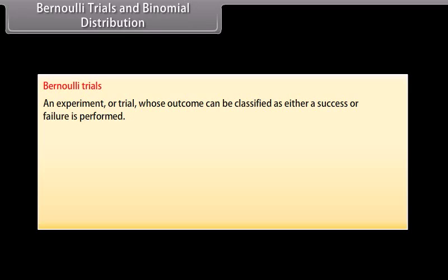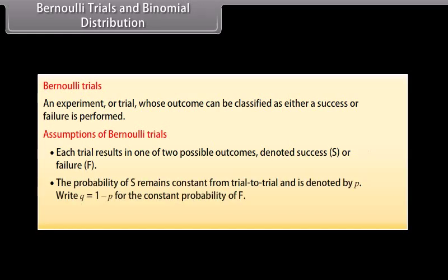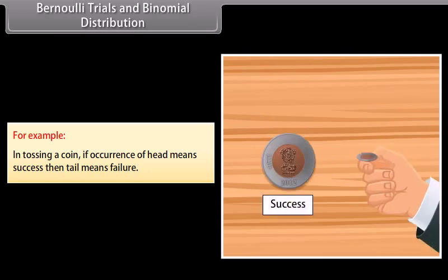Bernoulli Trials and Binomial Distribution. Bernoulli Trials: An experiment or trial whose outcome can be classified as either a success or failure. Assumptions: Each trial results in one of two outcomes — success (S) or failure (F). The probability of success P remains constant from trial to trial; Q = 1 − P is the constant probability of failure. The trials are independent and finite in number. For example, in tossing a coin, if heads means success, then tails means failure.